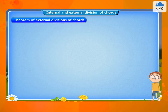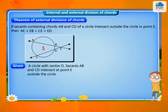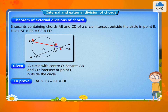Theorem of external division of chords: If secants containing chords AB and CD of a circle intersect outside the circle at point E, then AE × EB = CE × ED. Given: a circle with center O; secants AB and CD intersect at point E outside the circle. To prove: AE × EB = CE × DE.